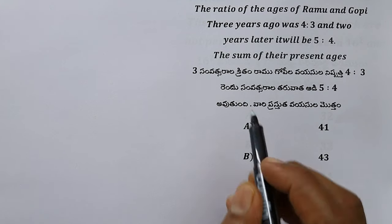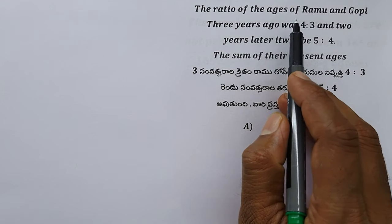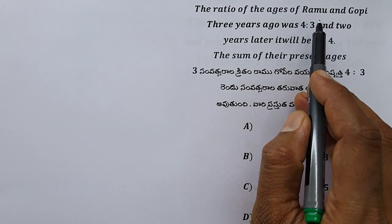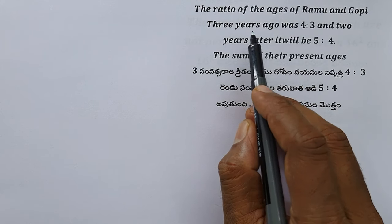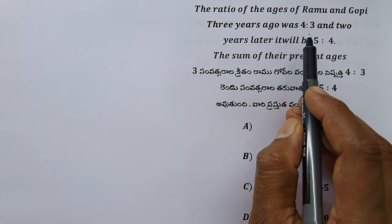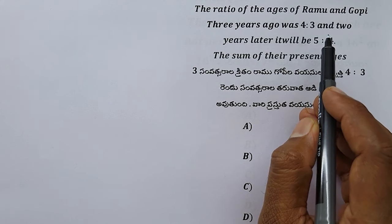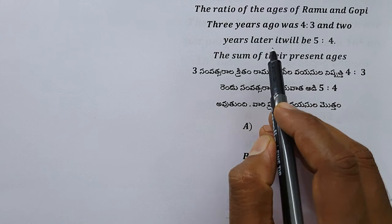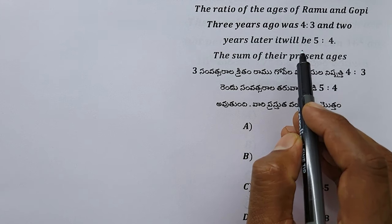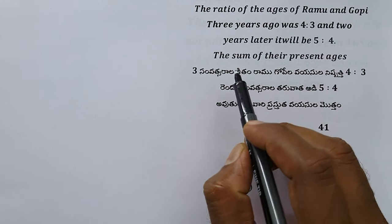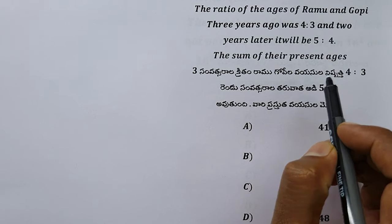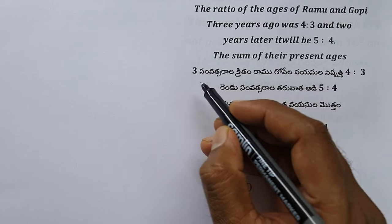Observe the question. The ratio of the ages of Ramu and Gopi 3 years ago is 4 is to 3, and 2 years later it will be 5 is to 4. Find the sum of their present ages.